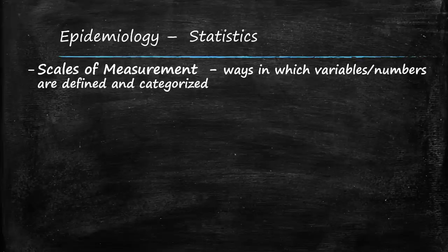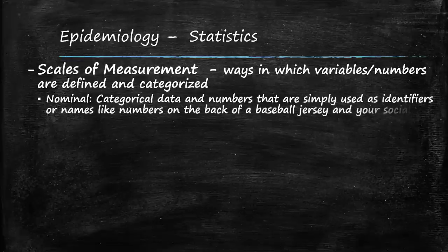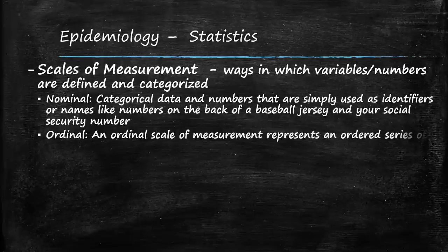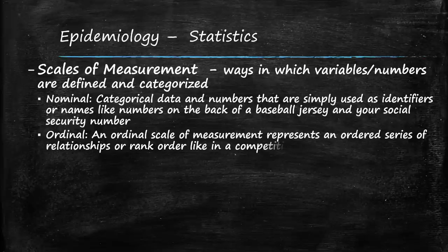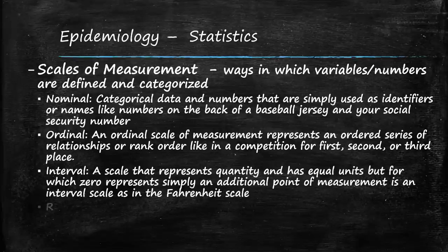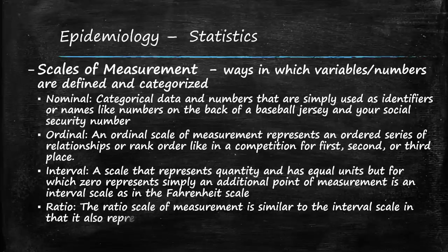Scales of measurement are ways variables and numbers are identified and categorized. Nominal data uses numbers simply as identifiers or names, like jersey numbers or social security numbers. Ordinal data represents an ordered series of relationships or rank, like competition rankings (first, second, third). Interval data represents quantity with equal units, but zero is just an additional measurement point. Ratio scale is similar to interval and also represents quantity with equal units.